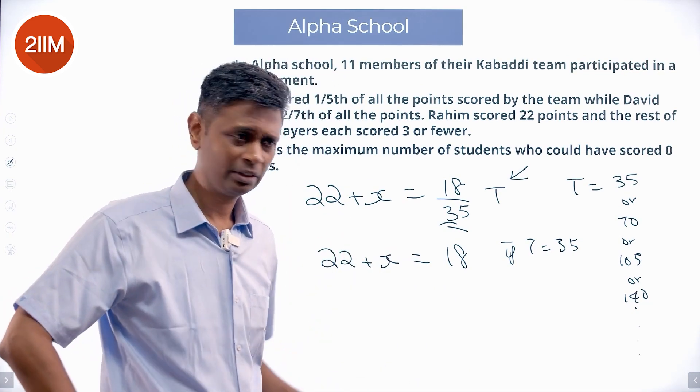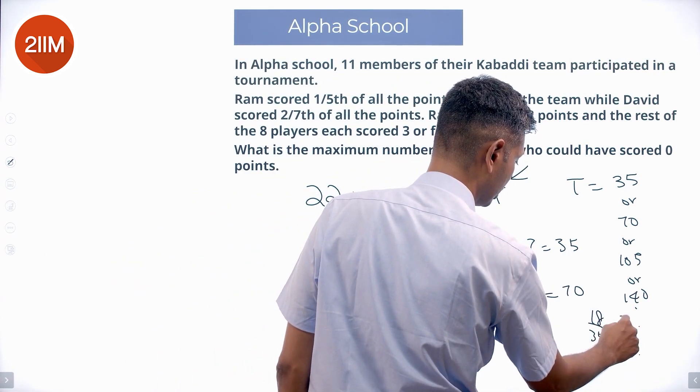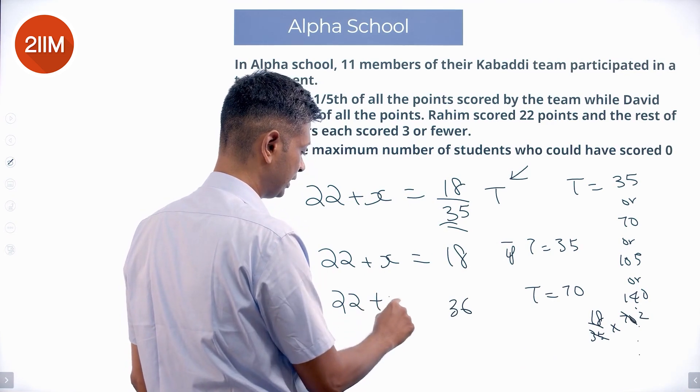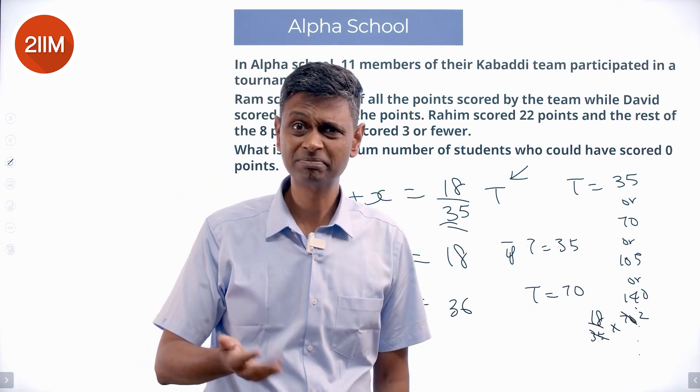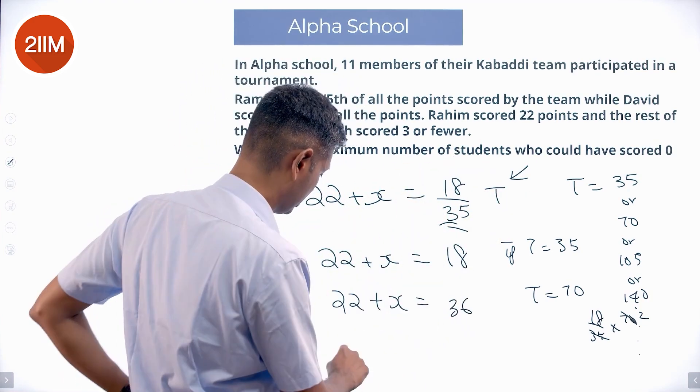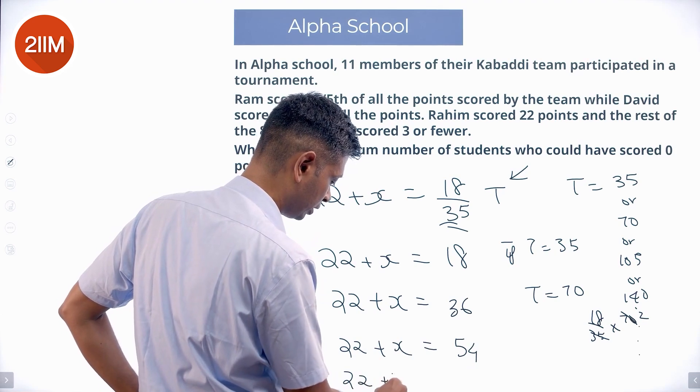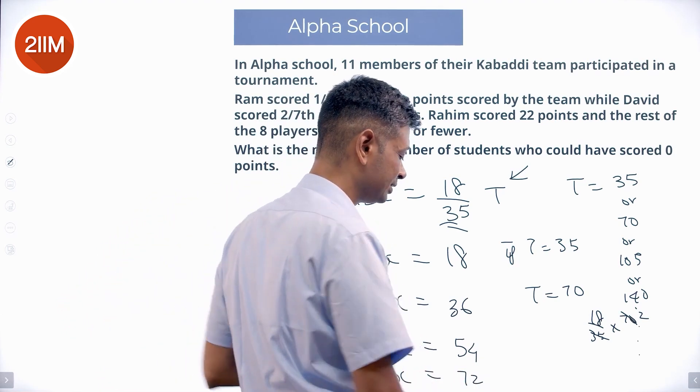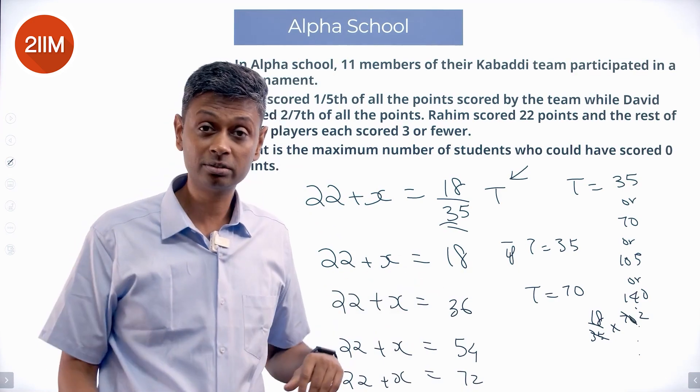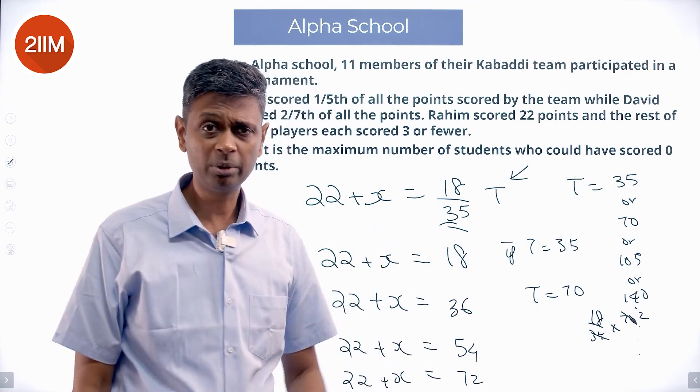So total is not 35. If I put total equal to 70, 18 by 35 into 70 is 18 into 2, 36. 22 plus X equals 36. Maybe that is possible. Next step, it will be 18 into 3. 22 plus X equal to 54. 22 plus X equal to 72. These are all possibilities. I know that this 22 plus X could be 36 when total is 70, 2 times 35. 3 times 35 will be 54, 4 times 35 will be 72 and so on.